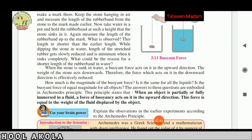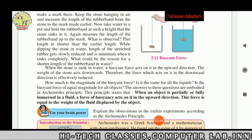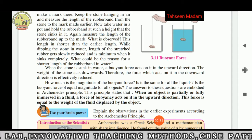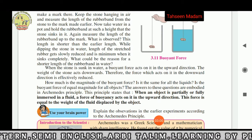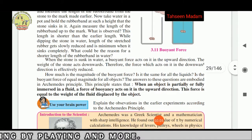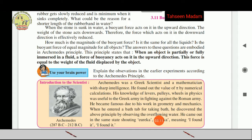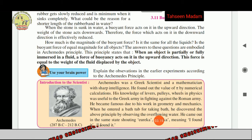How much is the magnitude of the buoyant force? Is it the same for all liquids? Is the buoyant force of equal magnitude for all objects? The answers to these questions are embodied in Archimedes' principle. This principle states that when an object is partially or fully immersed in a liquid, a force of buoyancy acts on it in the upward direction. This force is equal to the weight of the fluid displaced by the object.